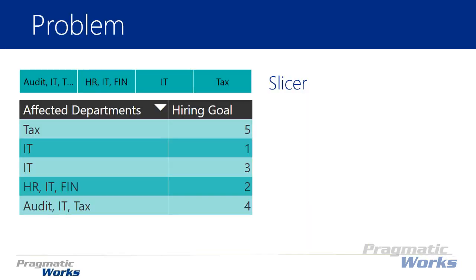So this is the problem that we had. We have a slicer across the top here, and of course a slicer is nothing more than a visual filter. What the end user or client wanted is they wanted not a slicer that was an exact match, but a slicer that was more of a search filter or would give them search criteria.